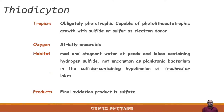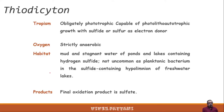During sulfide oxidation, globules of elemental sulfur are transiently stored in the gas vacuole and free peripheral part of the cell. Tropism: they are obligatorily phototrophic, capable of photolithotrophic growth only with sulfide or sulfur as electron donor, and are strictly anaerobic. They are normally found in mud and stagnant waters of ponds and lakes containing hydrogen sulfide, also as planktonic bacteria in sulfide-containing hypolimnion of freshwater.